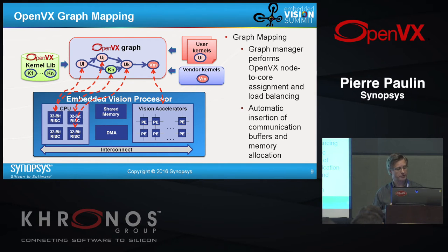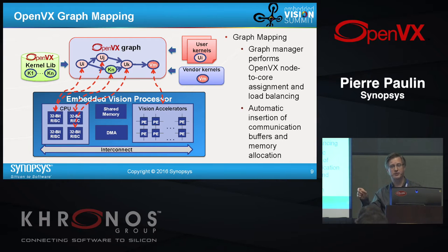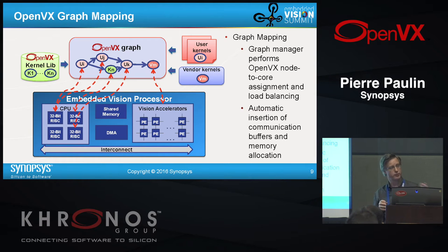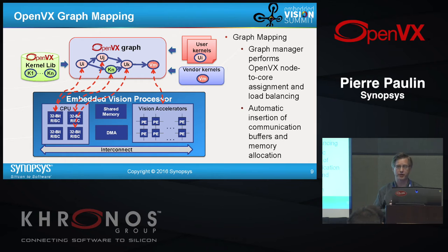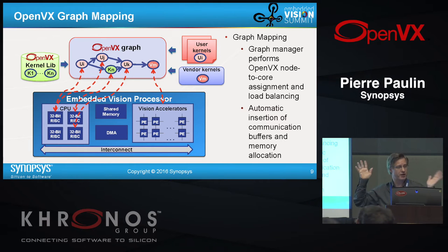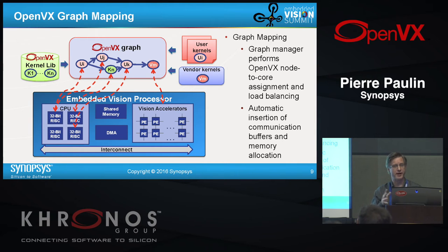When data is residing on a different processor, you want the runtime to manage communication automatically — whether through posted writes, DMA-based movement, or L1 cache coherency — depending on the storage class you've assigned. All of that is done automatically by the runtime when you go from one processor to another. By changing a hint, KN can run on the same processor, and the runtime takes care of reassigning, reallocating, and removing the DMAs. Everything is then local in the same L1 data cache or DCCM. That is all managed by the runtime.